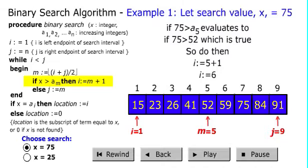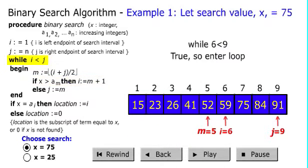Then, 75 is greater than a sub 5. That evaluates to true, so then we move the i pointer. We go back to the while and do it again.